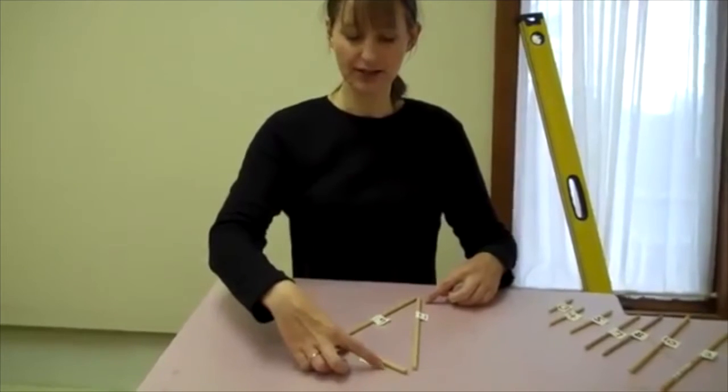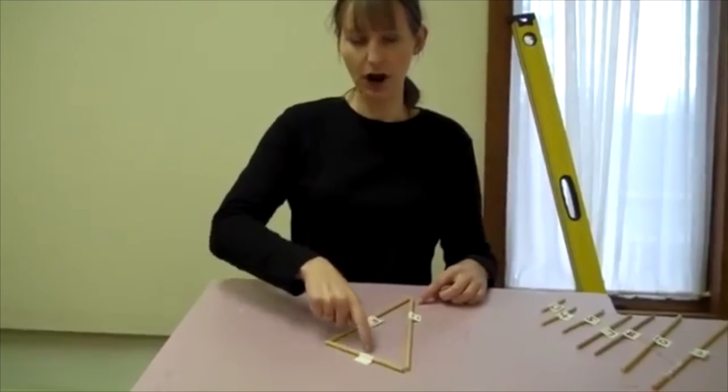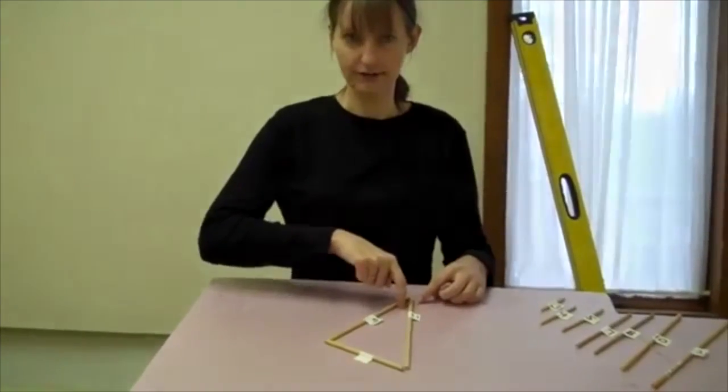The smallest side is down here at six. So the smallest angle is going to be this one up here, opposite the side of six.